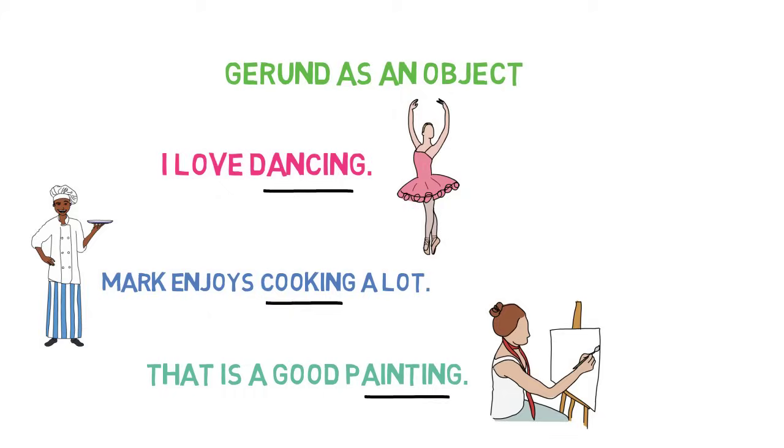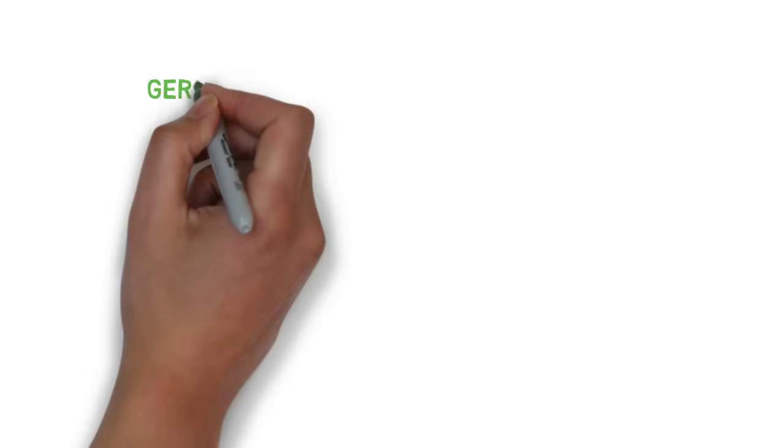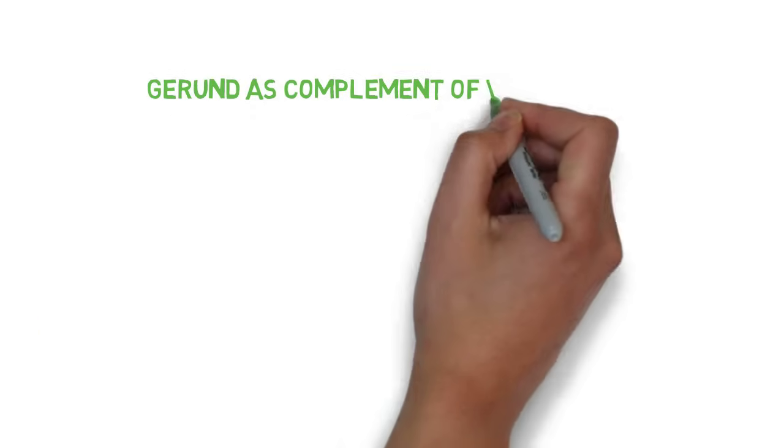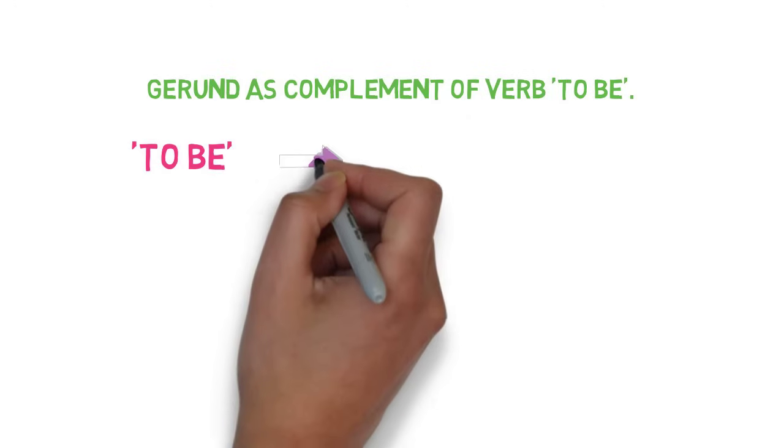Let's look into one more use of gerund. Gerund can be used as complement of verb to be. Now, what are to be verbs?